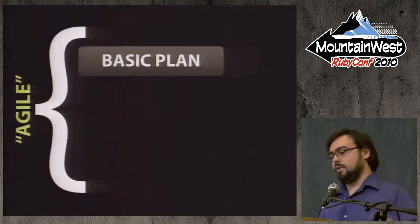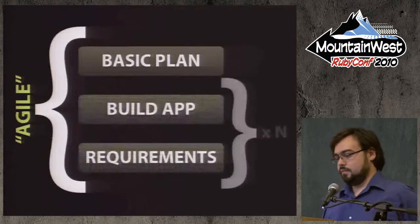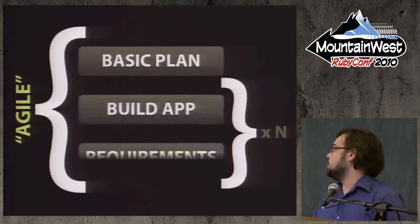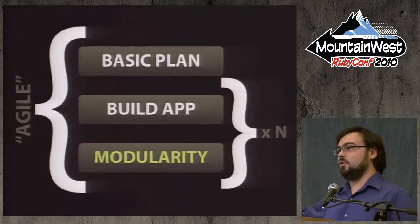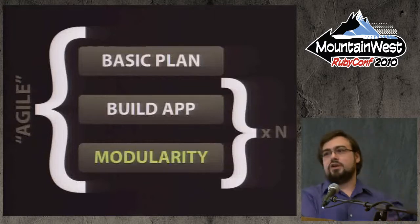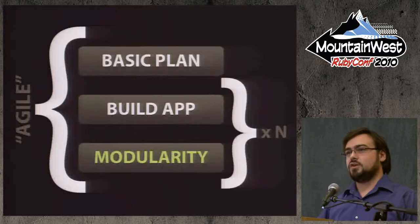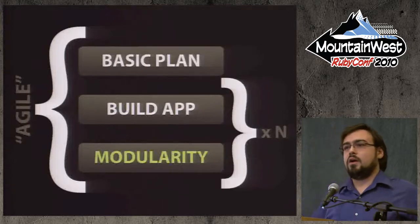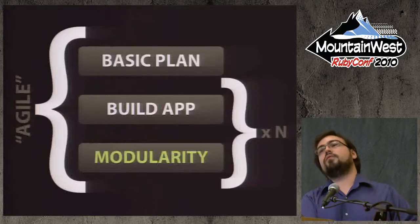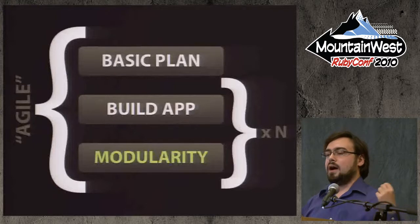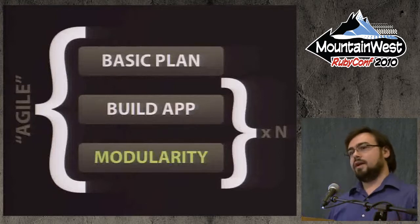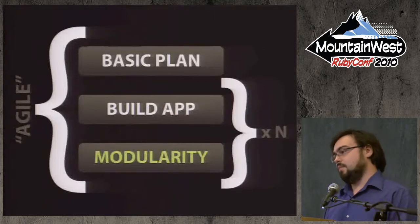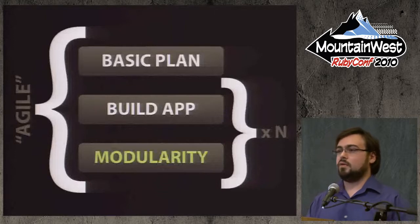So Agile is: you have a basic plan, build your app, and do that a bunch of times — building your app, gathering requirements, building your app, gathering requirements. At some point in the future, that's where you do the modularity. Because if you do modularity up front — if you leave this talk saying 'modularity is awesome, I'm going to spend two weeks figuring out the architecture' — you will end up guessing wrong. It's not a matter of not being good enough; even the best programmer in the world would get it wrong starting out thinking about architecture. That's something you figure out later.